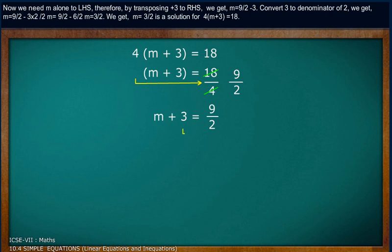Now we need m alone on the left-hand side. Therefore, by transposing plus 3 to the right-hand side, we get m equals 9 by 2 minus 3. Convert 3 to denominator of 2.